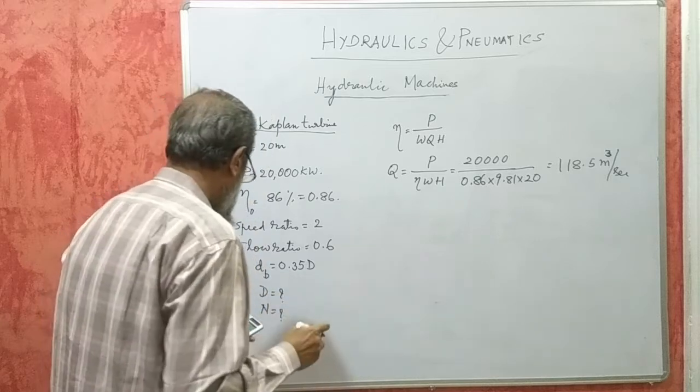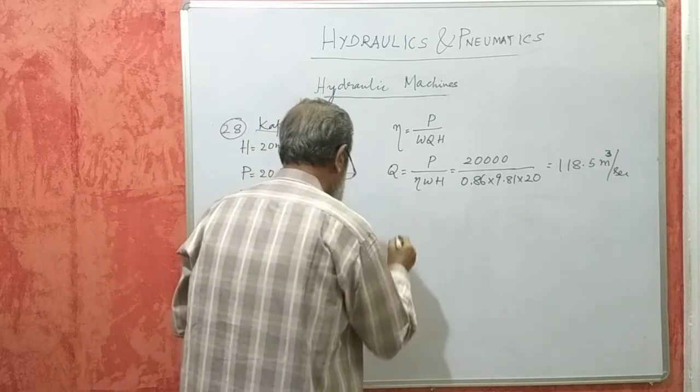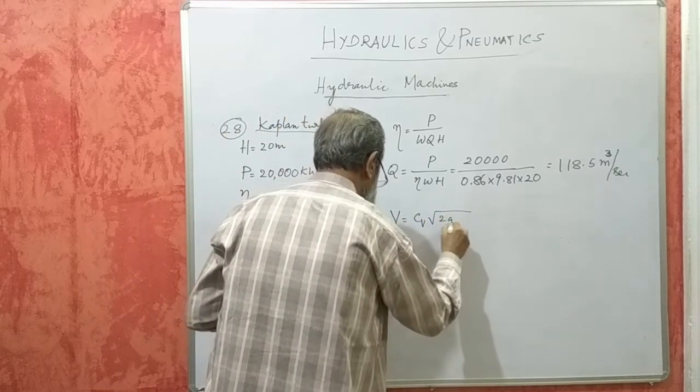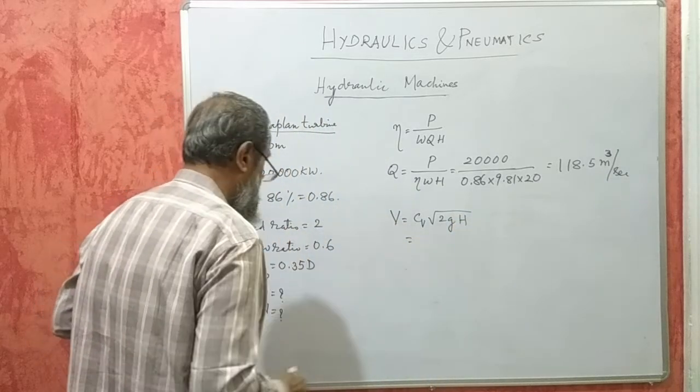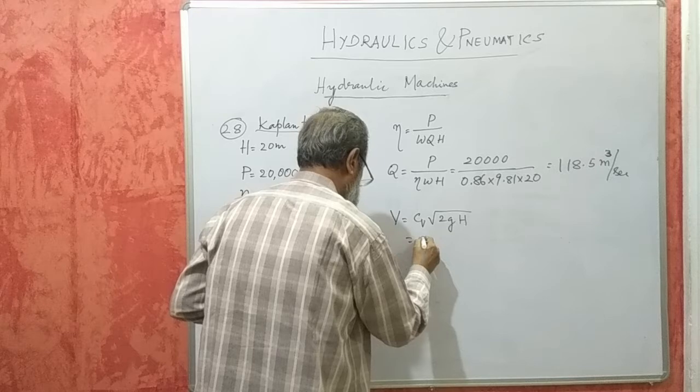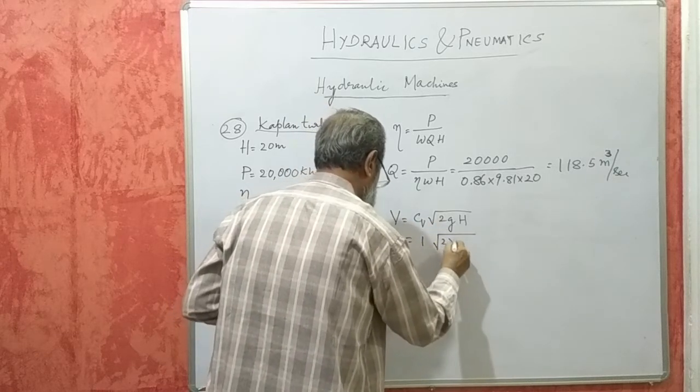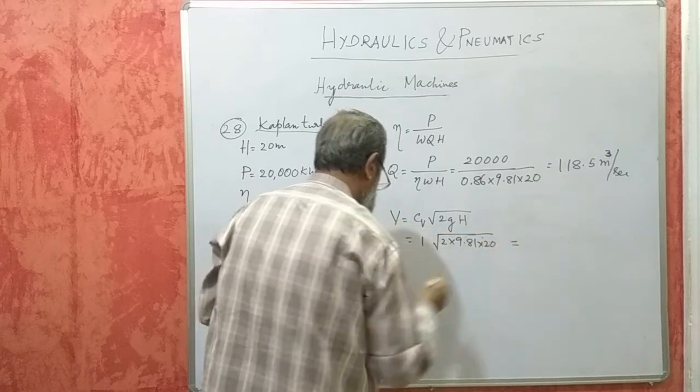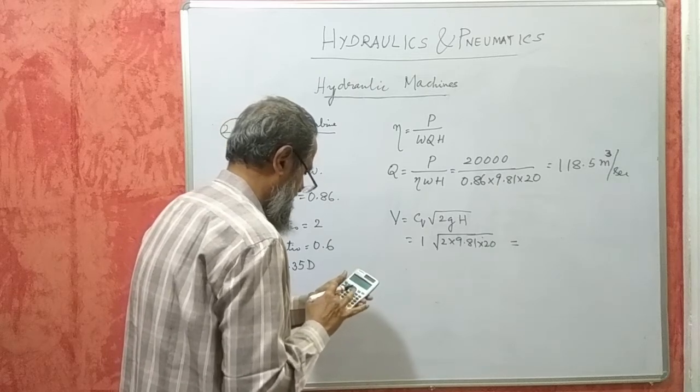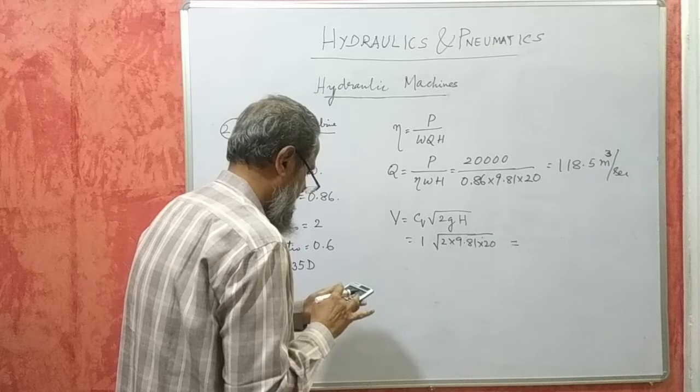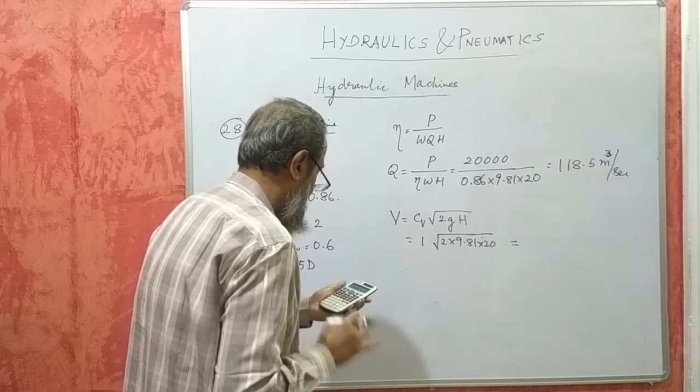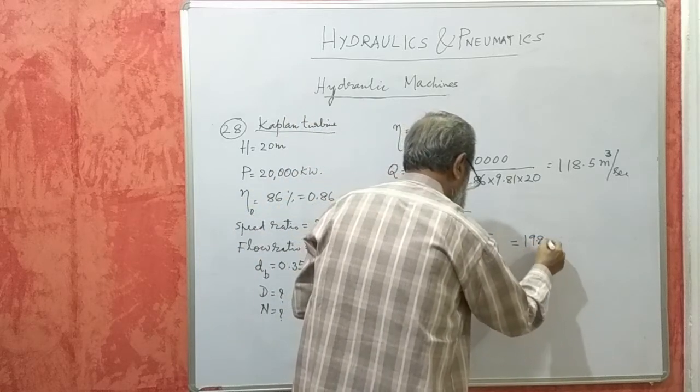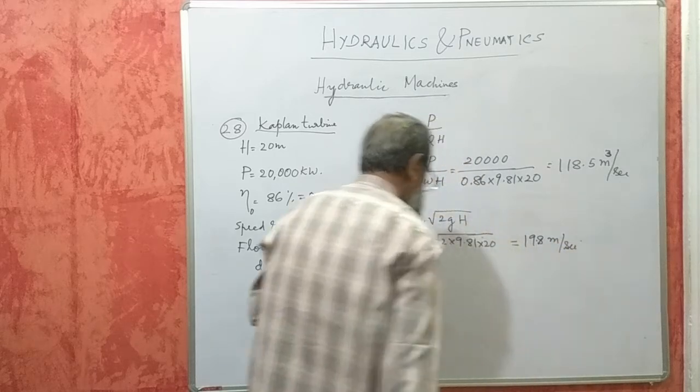Next, velocity with which the water is entering, capital V is equal to Cv into root 2GH. Cv is not given, so it will be assumed as 1 whenever it is not given. 2 into 9.81 into 20, root of that answer is 19.8 meters per second.